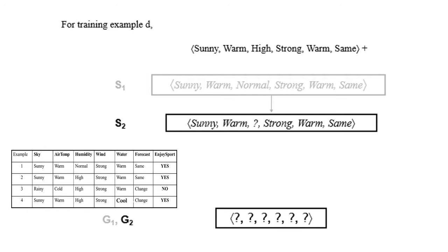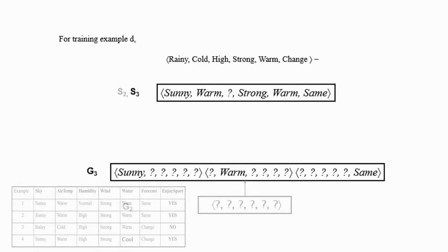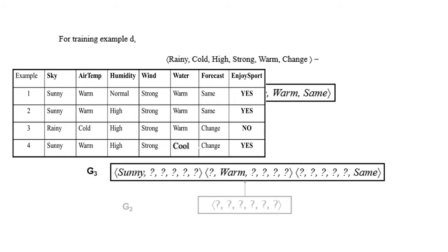For the third training sample, which has a negative target concept, S3 remains the same as S2, since the most specific boundary does not consider negative samples. For G3, we take one attribute value at a time and replace it with a question mark. The first hypothesis in G3 compares the question mark with 'rainy'. To classify the third example as negative, we need the opposite value, which is 'sunny' found in x1 and x2. So 'sunny' is added in the first position.